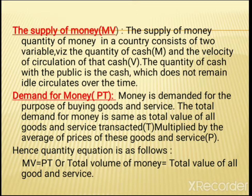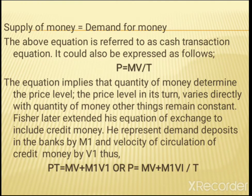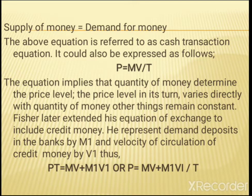Supply of money equals demand for money. The above equation is referred to as the Cash Transaction Equation, and it can also be expressed as: P = MV / T. This equation implies that the quantity of money determines the price level, which in turn varies directly with the quantity of money, other things remaining constant. Fisher later extended his equation of exchange to include credit money, representing demand deposits in the bank by M1 and velocity of circulation of credit money by V1. Thus: PT = MV + M1V1, or P = (MV + M1V1) / T.